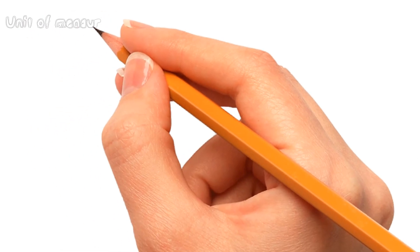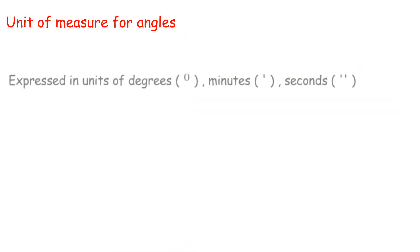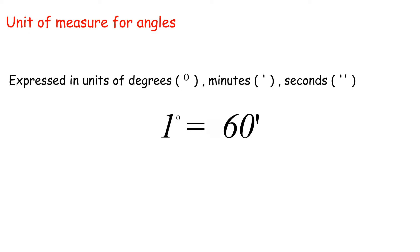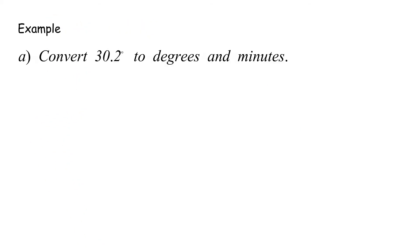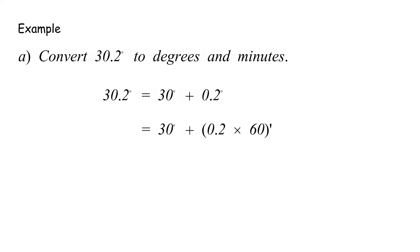Unit of measure for angles: expressed in units of degrees, minutes, and seconds. 1 degree equals 60 minutes. Example A: Convert 30.2 degrees to degrees and minutes. 30.2° equals 30° plus 0.2°, equals 30° plus 0.2 times 60 minutes, equals 30° plus 12 minutes, equals 30° 12'.